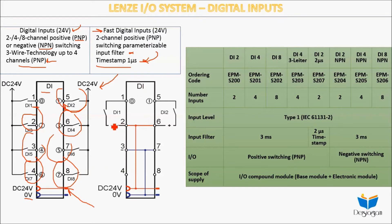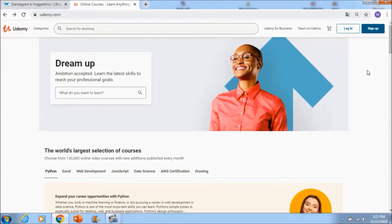For the fast digital input, you can see the plus terminal here — digital input one and digital input two with 24 volt. Pins two and six are connected to 24 volt, and pins three and seven are connected to zero volt directly. This is how you get your fast digital inputs.